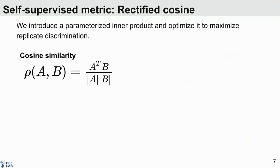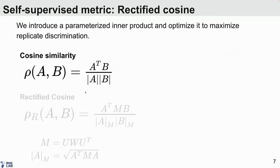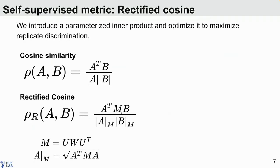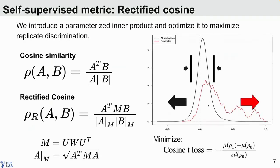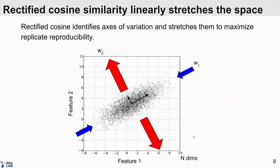We begin with cosine similarity — just a basic inner product — and we modify it by introducing this parameter M. This is a matrix, and we've experimented with quite a few formulations. The one I'll talk about here is a very simple linear transformation with two unitary matrices and some re-weighting on principal component space. This learns an embedding on your original data space and defines a similarity function. We optimize this parameter M so that replicate similarities shown here in red are brought close together, whereas similarities of non-replicates are kept apart. Conceptually, this linear transformation is stretching the data set along axes of variation in such a way that replicate similarity is maximized.